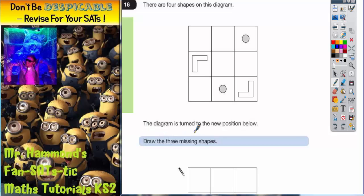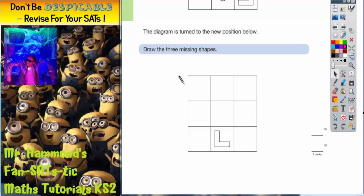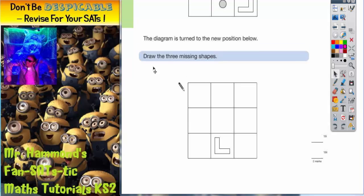It says the diagram is turned to the new position below. So it's turned to there. Now as you can see some shapes are missing. So what we've got to do is draw the three missing shapes.